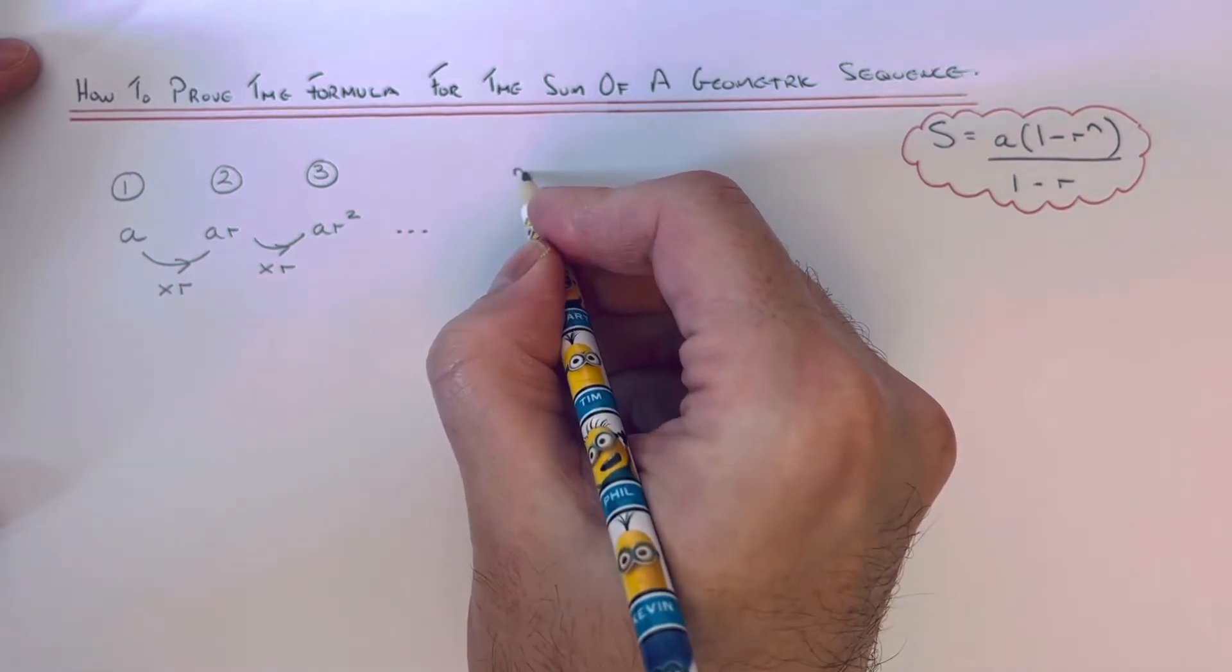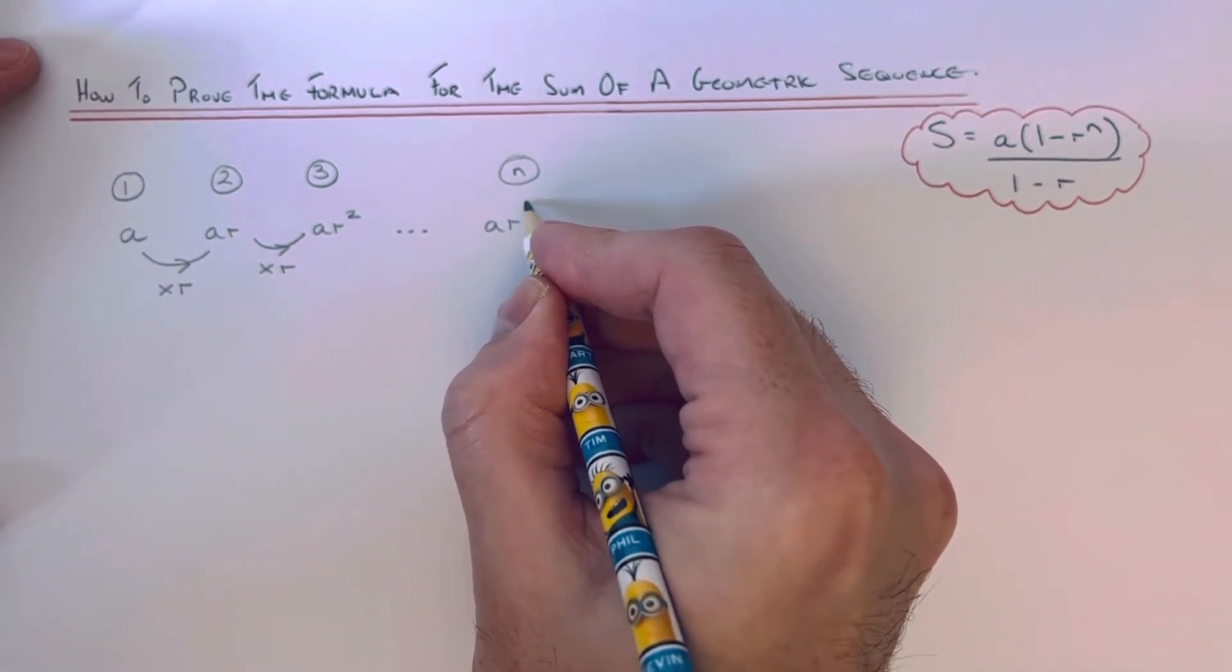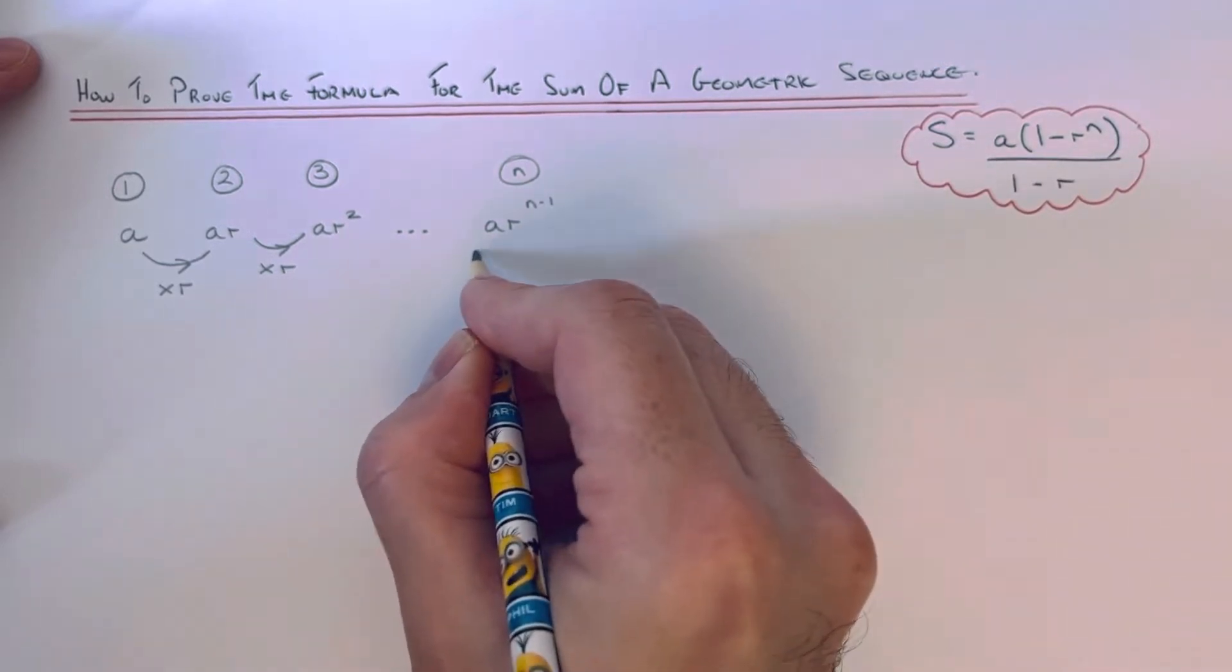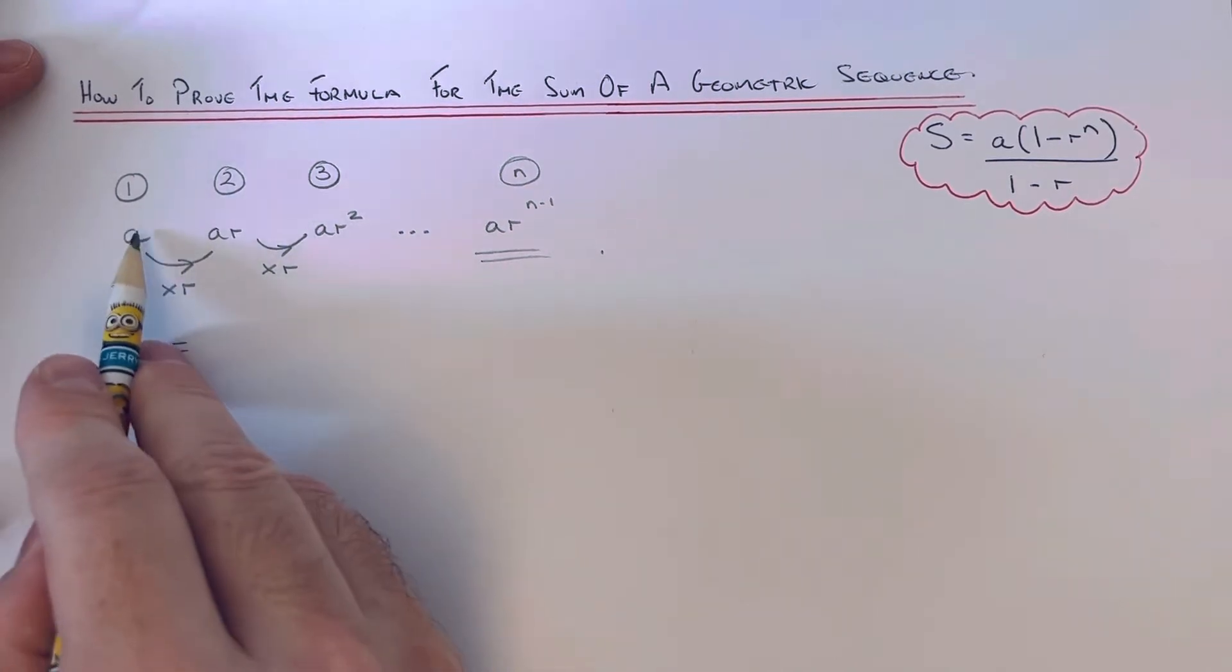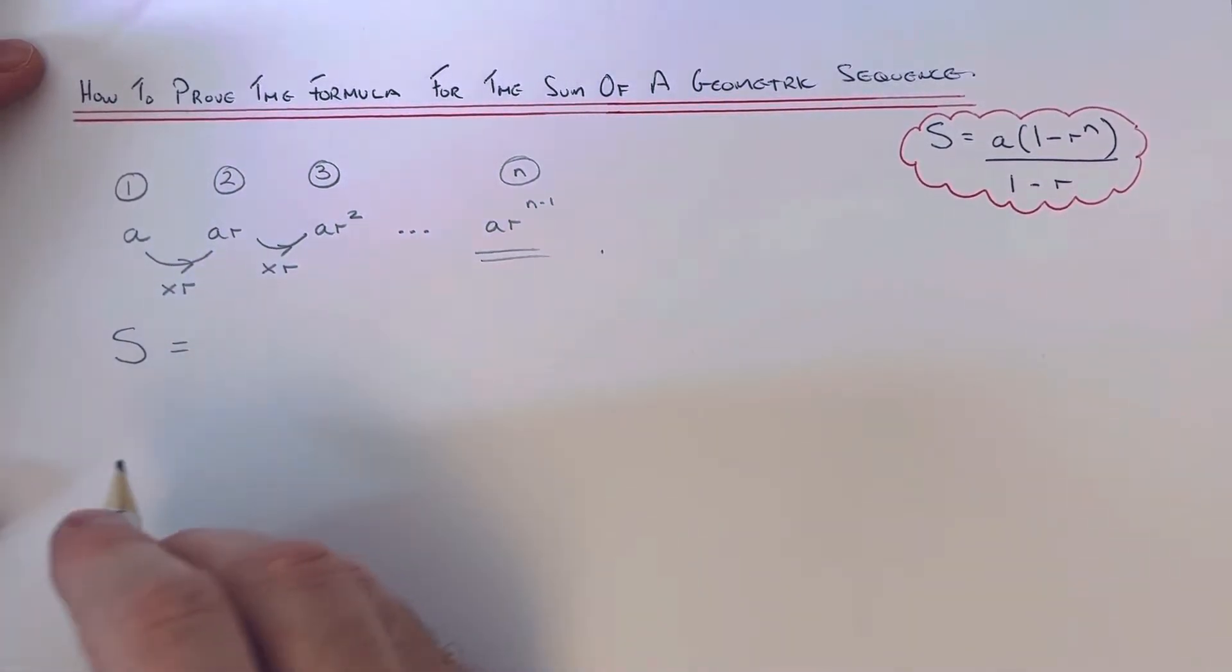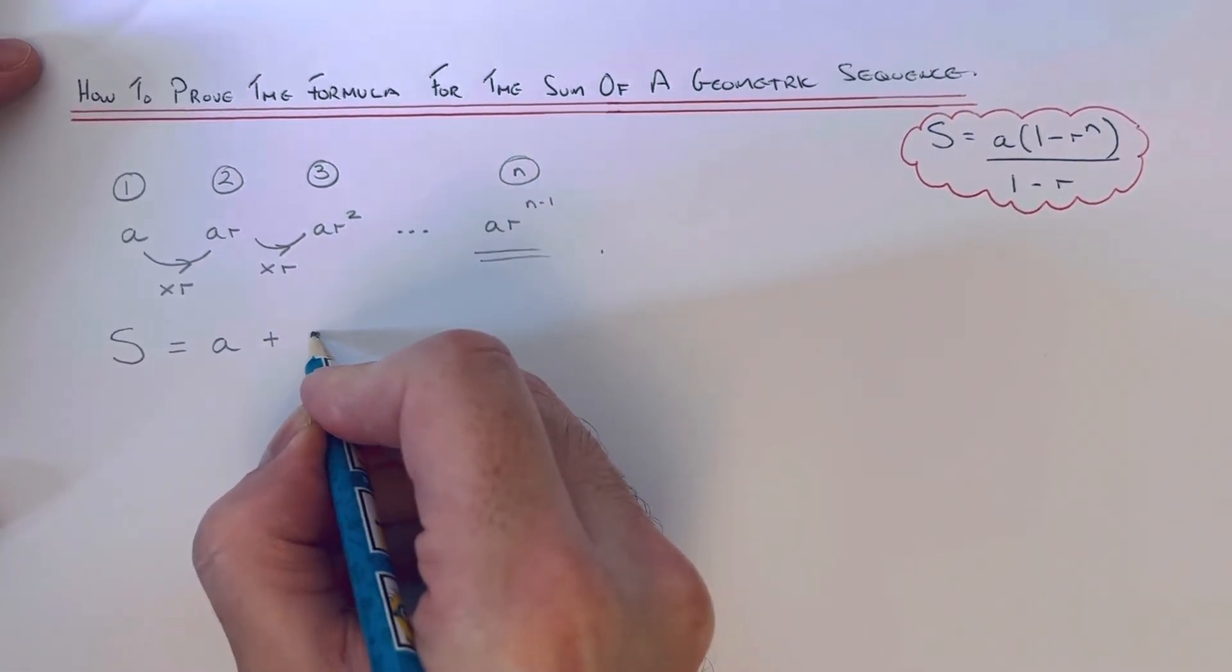So if we keep going, the nth term at the end would be ar to the power of n minus one. To work out our sum, we just need to add these numbers up in our sequence, so it'd be a plus ar...